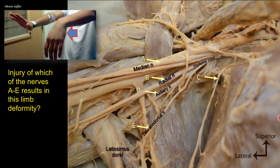So B is the radial nerve, whose injury results in wrist drop deformity. To complete the set: nerve C runs along the mid-axillary line on the surface of serratus anterior, which it supplies. It is not derived from the cords but from the roots of the brachial plexus — it is the long thoracic nerve, derived from roots C5, C6, and C7.